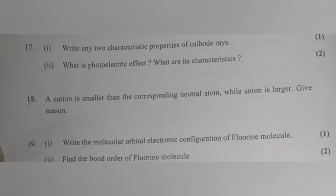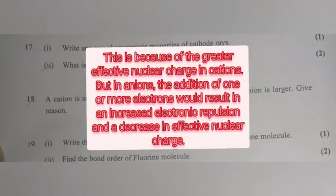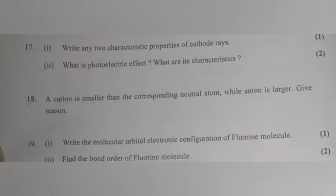Question 8: A cation is smaller than the corresponding neutral atom, while an anion is larger. Give the key reason. Answer: This is because of the greater effective nuclear charge in cations. But in anions, the addition of one or more electrons would result in increased electronic repulsion and a decrease in effective nuclear charge.